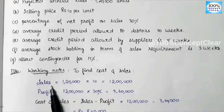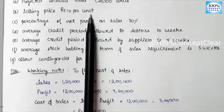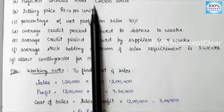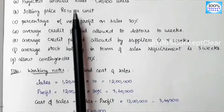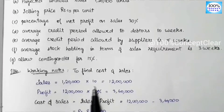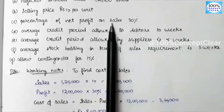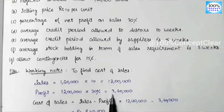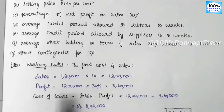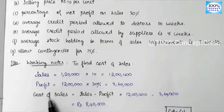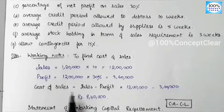Sales is equal to 1,20,000 units into Rs. 10, which is Rs. 12,00,000. Profit is 30% on sales. So profit equals 12,00,000 into 30% divided by 100, which equals Rs. 3,60,000. Sales minus profit equals cost of sales.